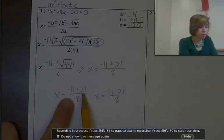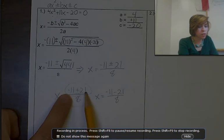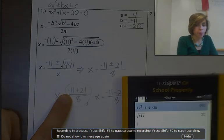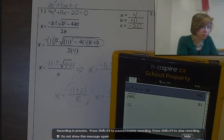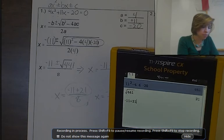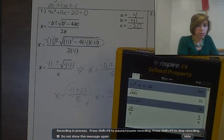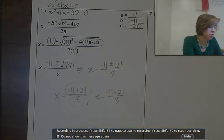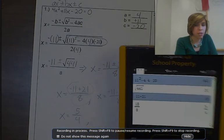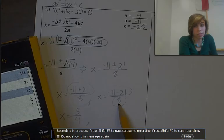I'm going to put this in my calculator, first making sure the top and bottom are completely reduced. Negative 11 plus 21 — I can evaluate that and get a number. Negative 11 plus 21 gives me 10, then I divide by 8, and the reduced fraction is 5 over 4. So x equals 5 over 4.